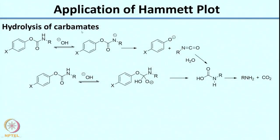In both examples we have done, what you see is that the positive charge is reducing from the reactant to the transition state. Now let us look at an interesting application of the Hammett plot — again to determine the mechanism of a particular reaction. The reaction we are looking at is hydrolysis of carbamates. This functional group — O–CO–NH — is called a carbamate, as distinct from an amide (CO–NH) or an amine (NH).